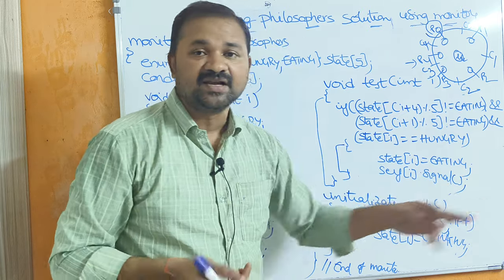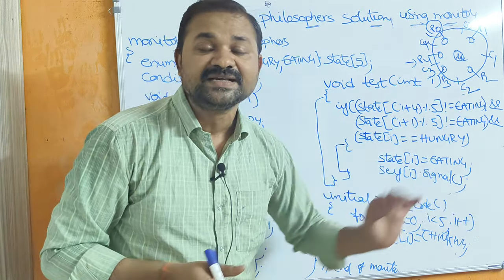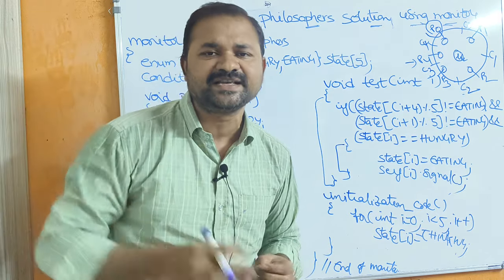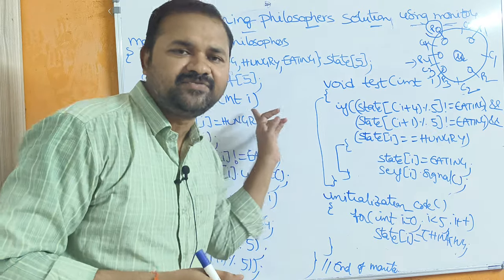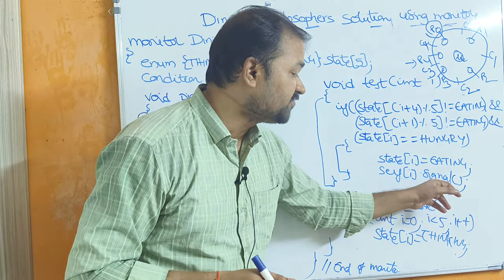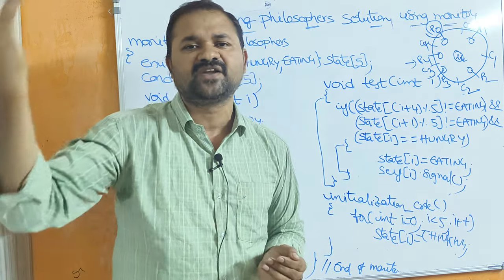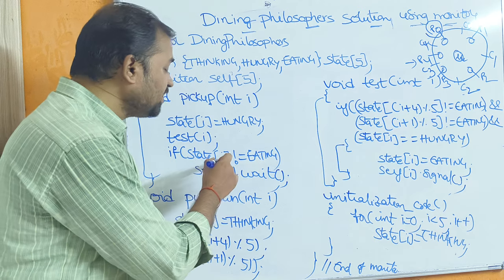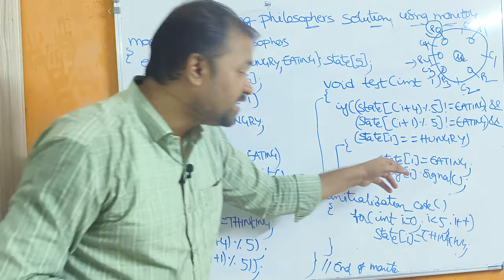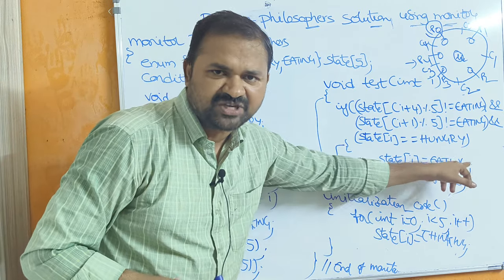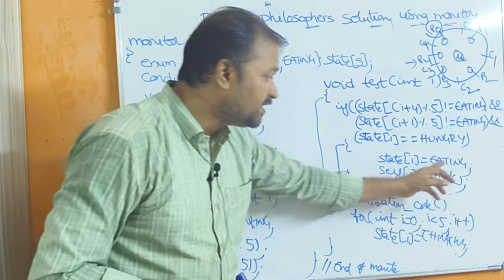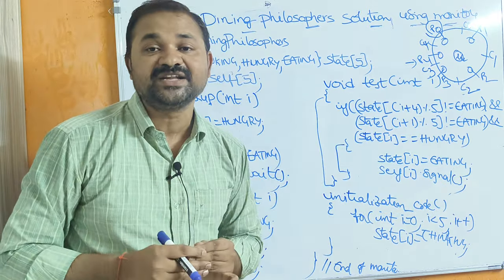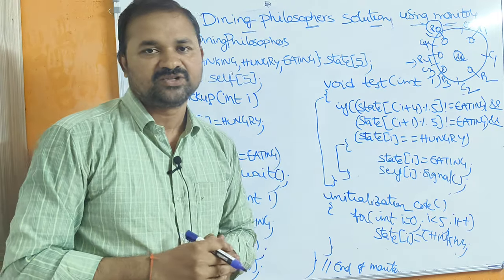Once the test function is over, control returns to the pickup function. The next statement checks: if state[i] != eating. Here state[0] = eating, so eating != eating is false — condition is false, so control exits the if-block. That means P0's eating can proceed. Now if one of the conditions in test were false — for example, if P1 were busy eating — then state[i] would not be set to eating, so state[0] would remain thinking.